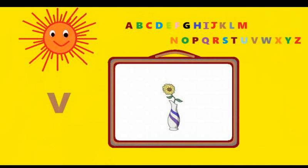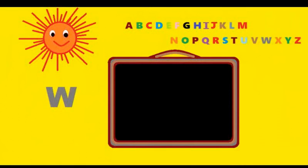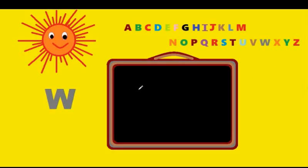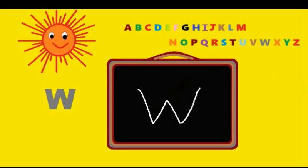Now W. Down the mountain, up the mountain, down the mountain, up the mountain. That's W. Let's watch it again: down the mountain, up the mountain, down the mountain, up the mountain. That's W. W is for watch.